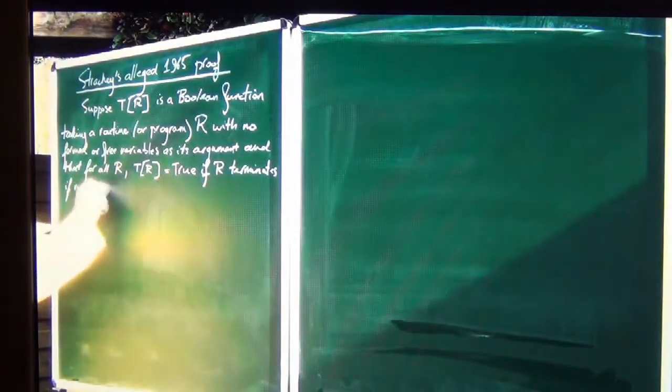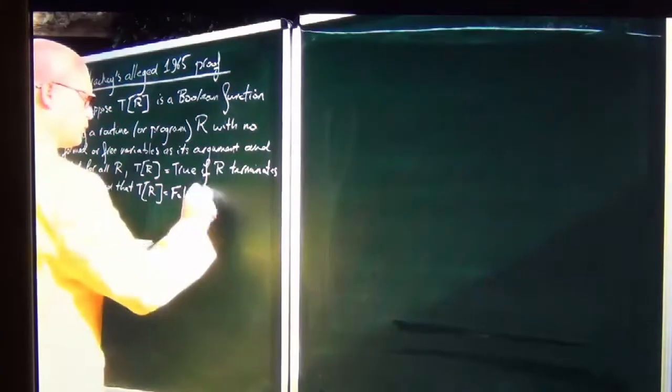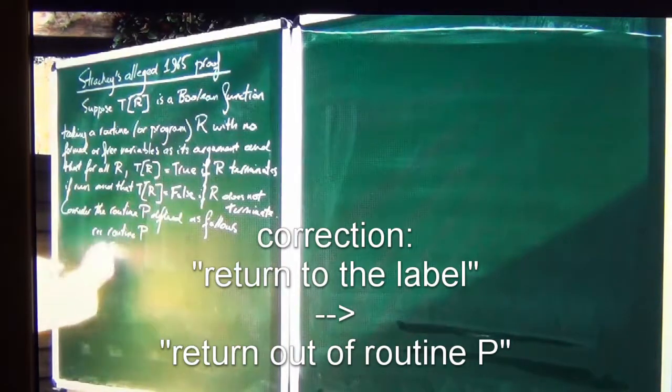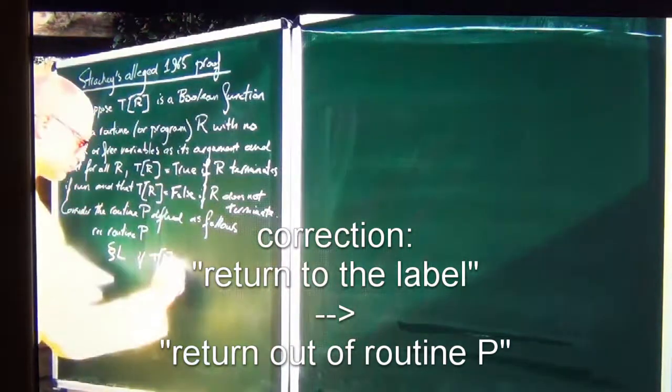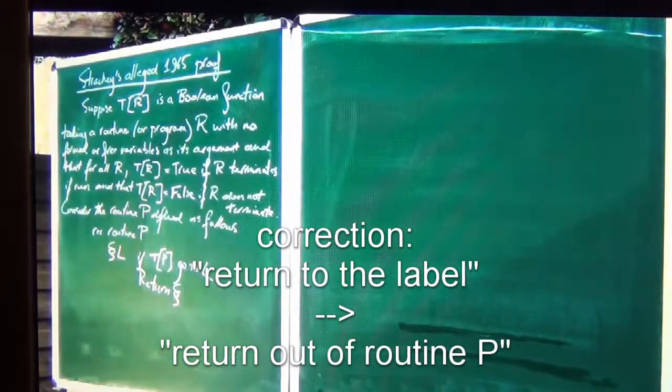Strachey's alleged 1965 proof. This is how it goes. Suppose T is a boolean function taking a routine or program R with no formal or free variables as its arguments, and that for all R, T is true if R terminates if run, and T is false if R does not terminate. Consider the routine P defined as follows: recursive routine P, label L, if T go to L, return to the label.